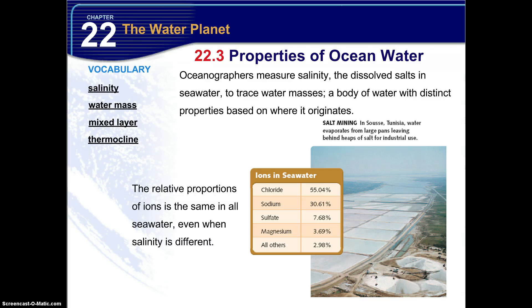The relative proportions of ions is the same in all seawater, even when salinity is different. So if you take seawater and look at just the ions — separating the water molecules from those ions — you'll notice that chloride is the most abundant, followed by sodium, and then all the others.